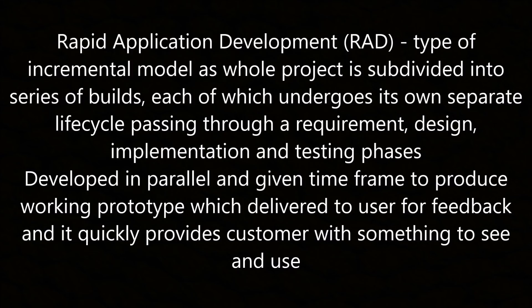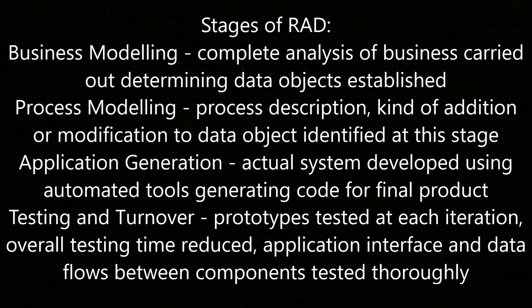Rapid application development, or RAD, is an incremental model where the whole project is subdivided into a series of builds, each of which undergoes its own separate lifecycle passing through requirements, design, implementation, and testing phases. It's developed in parallel and within a given time frame to produce a working prototype delivered to the user for feedback, quickly providing the customer with something to see and use. The stages of RAD include: business modelling (a complete analysis of the business determining data objects); process modelling (process descriptions for additions or modifications to data objects); application generation (the actual system developed using automated tools generating code for the final product); and testing and turnover (prototypes tested at each iteration, with overall testing time reduced and application interfaces and data flows thoroughly tested).